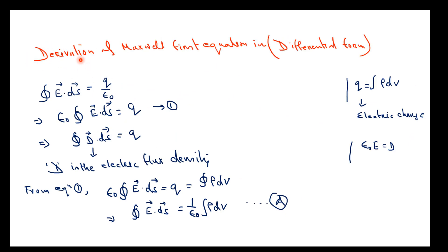This is the derivation of Maxwell's first equation in differential form. We start by writing the integral form of Gauss law in electrostatics: ∮E·ds = Q/ε₀. We also know that Q = ∫ρ dV, where Q is the electric charge and ρ is the charge density.